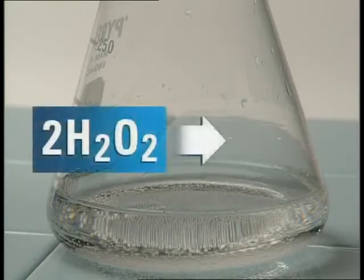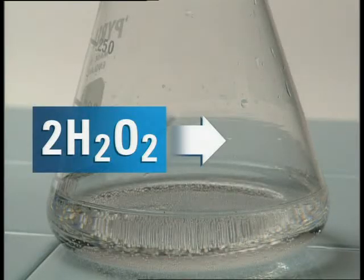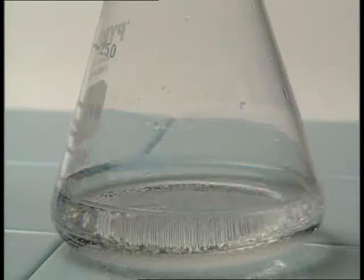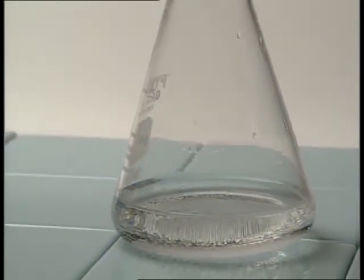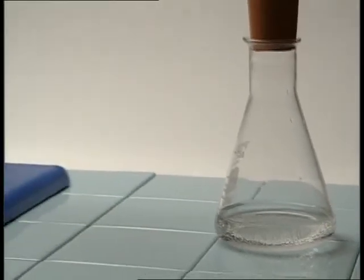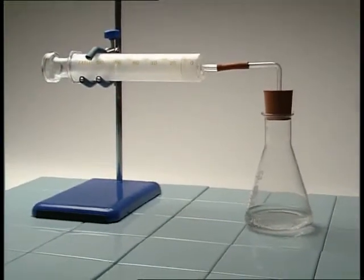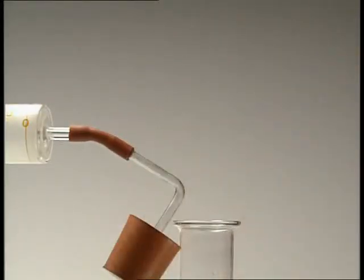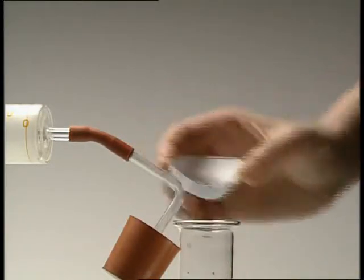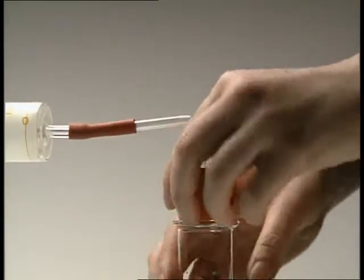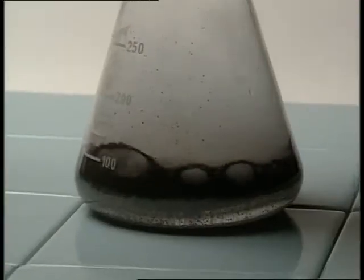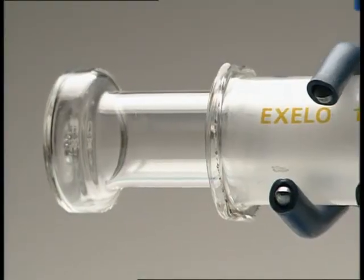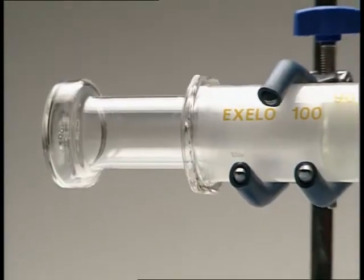This is hydrogen peroxide. It slowly decomposes to form water and oxygen. Any oxygen produced will be collected in the syringe, but at room temperature the reaction is so slow you'd think nothing was happening. One way of speeding up a reaction is to add a catalyst. Add manganese dioxide and the hydrogen peroxide quickly decomposes, producing oxygen.